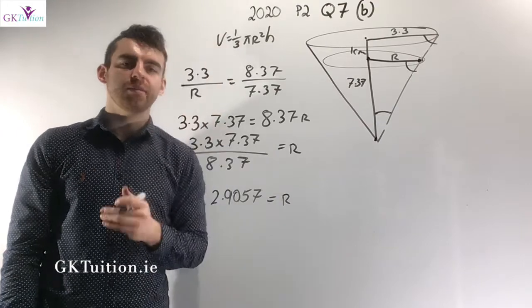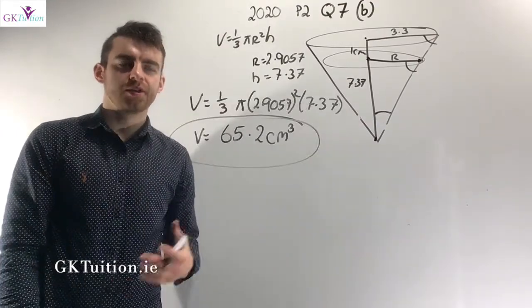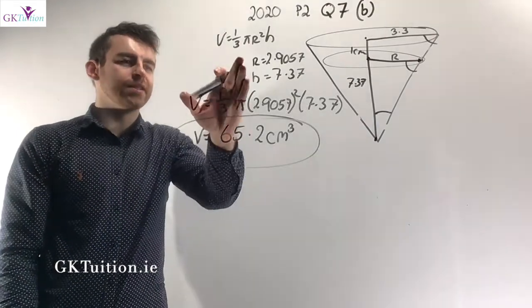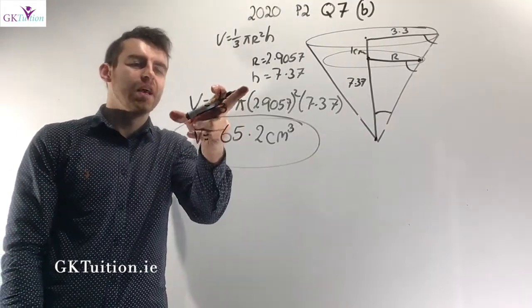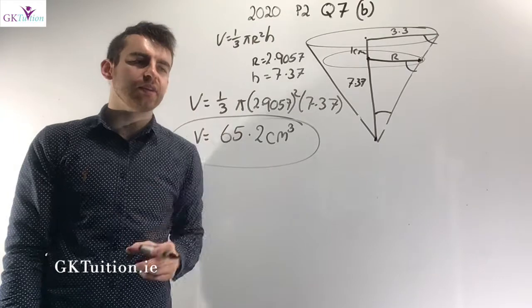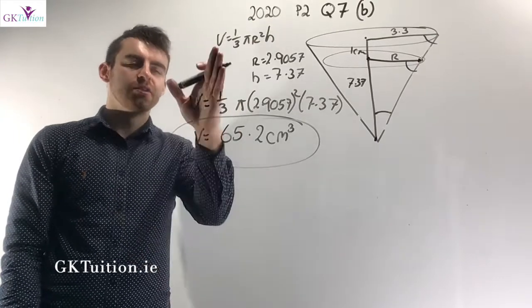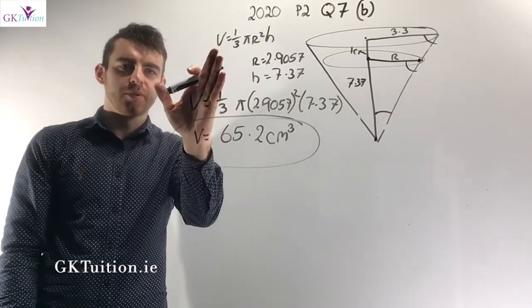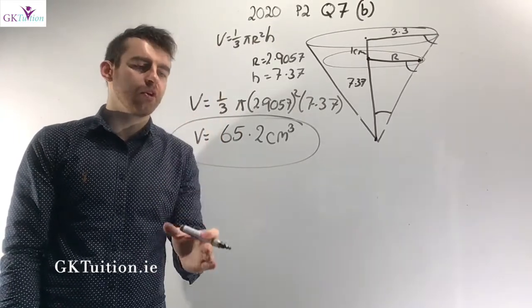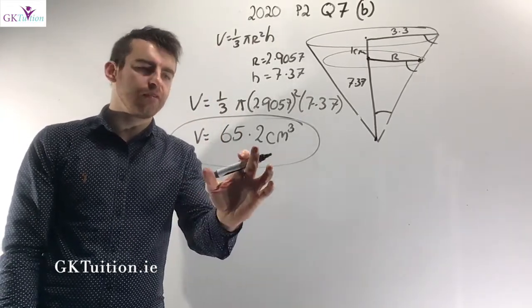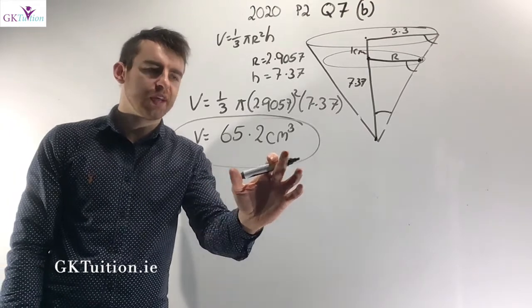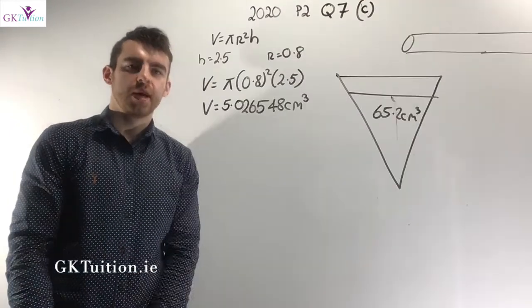Now I can get the volume of the water. I know the radius is 2.9057 and the height is 7.37. Substituting into the formula for the volume of a cone — one-third π r² h — the answer works out as 65.2 cm cubed.